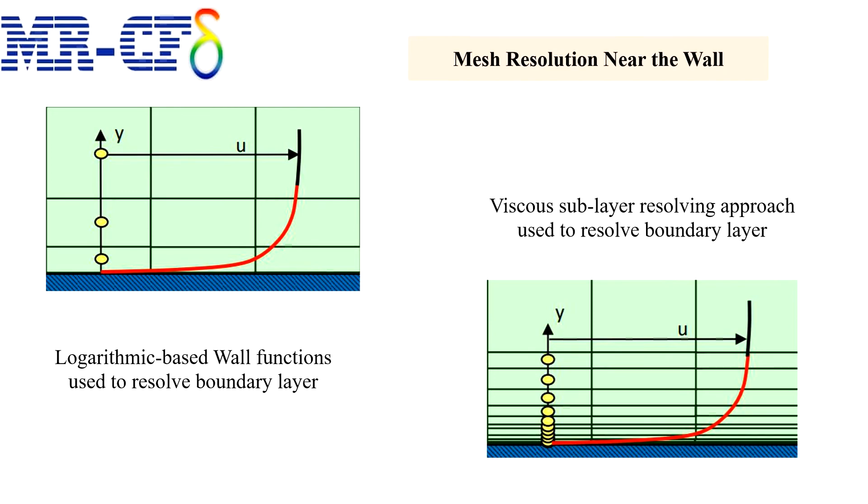During the preprocessing stage, you will need to know a suitable size for the first layer of grid cells, inflation layer I mean, so that Y plus is in the desired range. The actual flow field won't be known until you have computed the solution and indeed it is sometimes unavoidable to have to go back and remesh your model on account of the computed Y plus values.